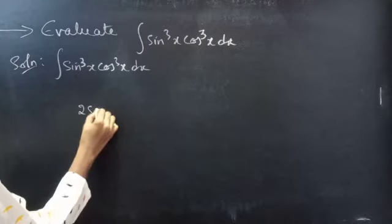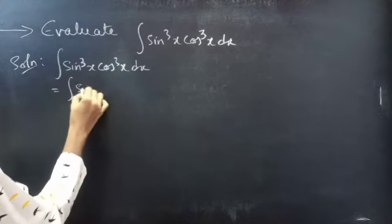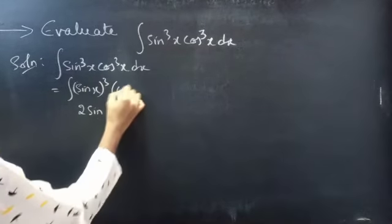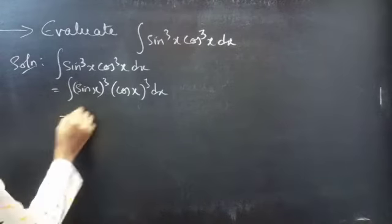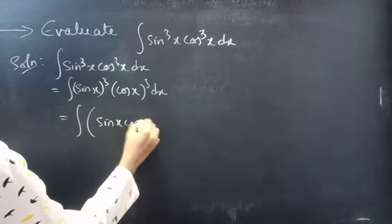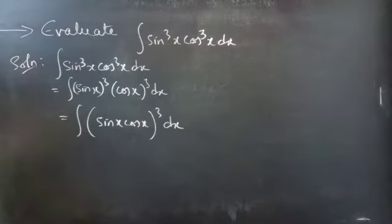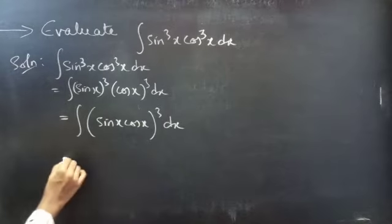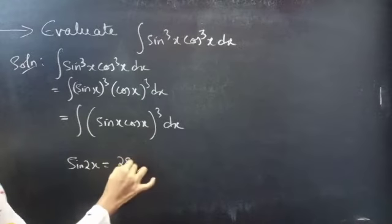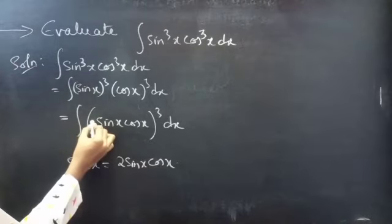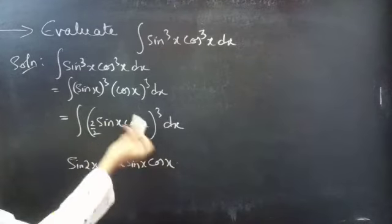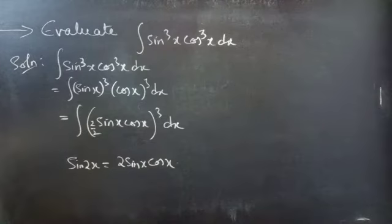We know that we can write this as sin x whole cube into cos x whole cube into dx. You can write this as sin x into cos x, whole cube, into dx. Since we know that sin 2x equals 2 sin x into cos x, you can replace sin x cos x by sin 2x by 2, or you can multiply and divide 2 to the integrand so that you can replace 2 sin x cos x by sin 2x.